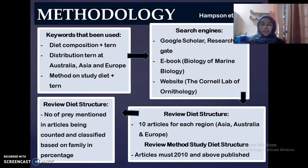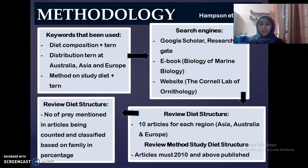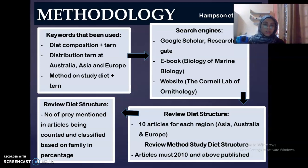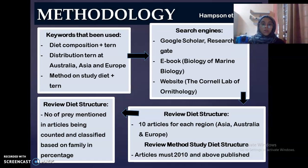Since I did a review paper, the first step was to identify keywords related to diet composition, distribution of tern at Australia, Asia and Europe, and also the method. I used all the keywords to search for related articles in search engines like Google Scholar, ResearchGate, and also in e-books and websites.